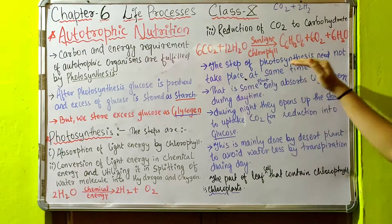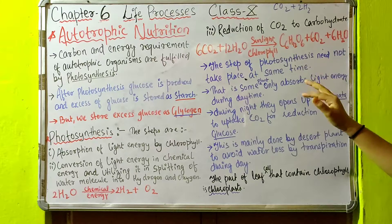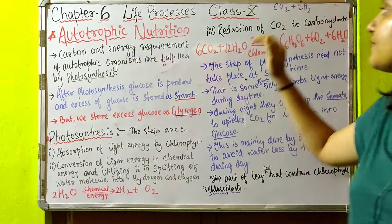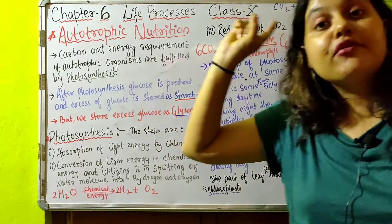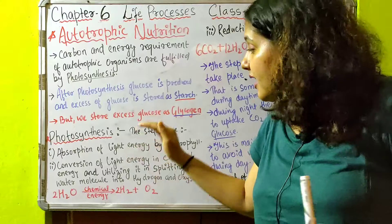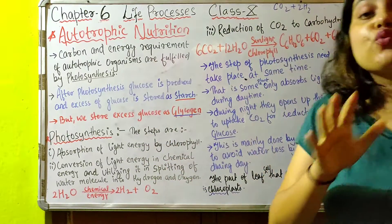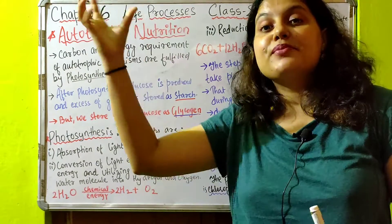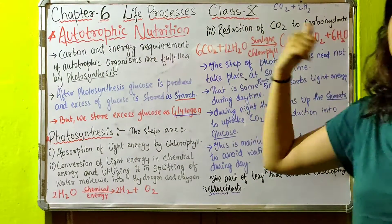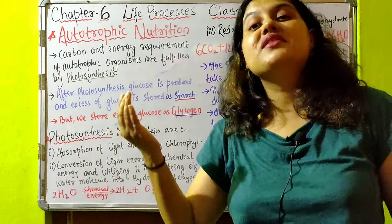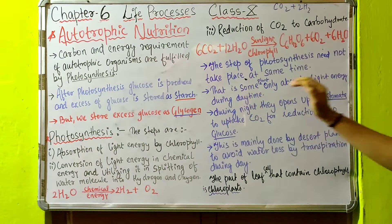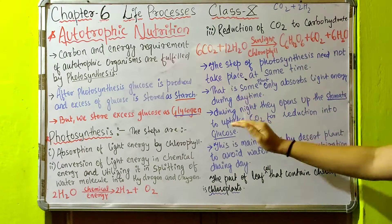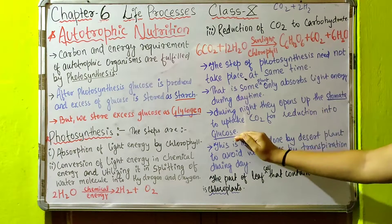The steps of photosynthesis do not need to take place at the same time. The first two steps — absorption of light and splitting of water — can take place during the daytime, and the third step — reduction of CO2 — can take place during the night in the absence of sunlight. Some plants only absorb light energy during the daytime, and during the night they open their stomata to uptake CO2 for reduction into glucose.